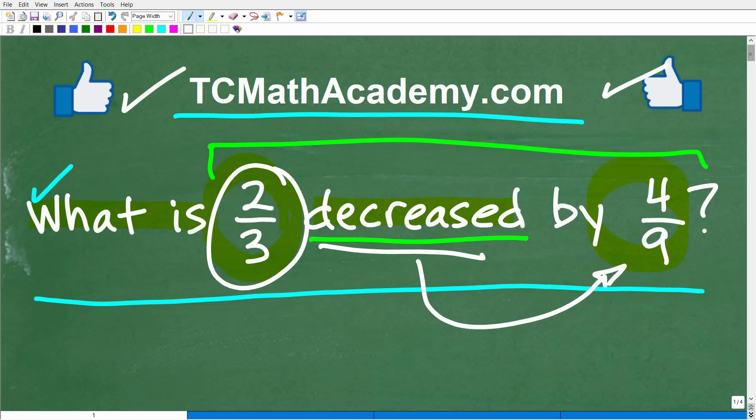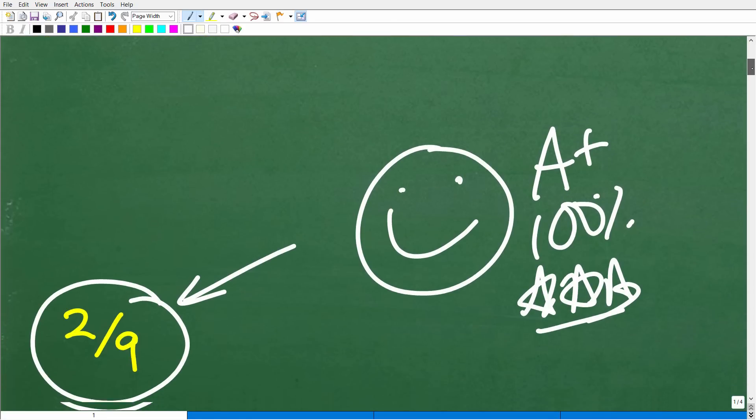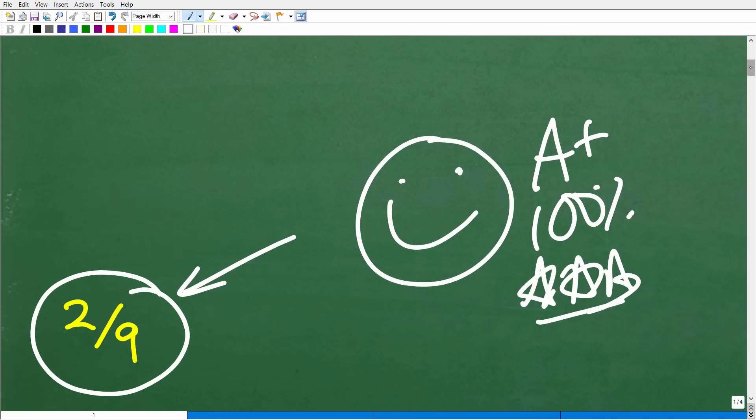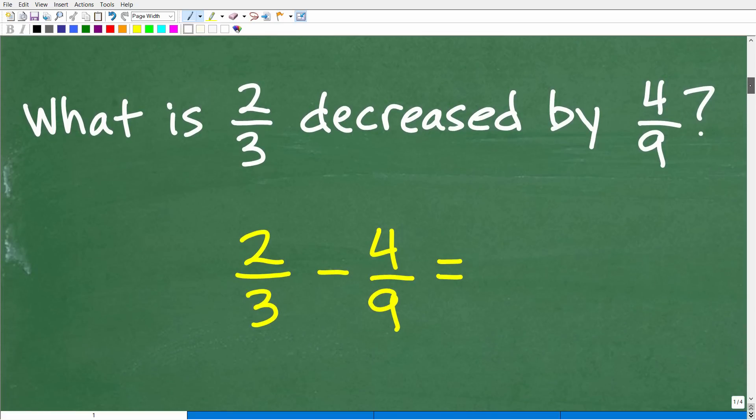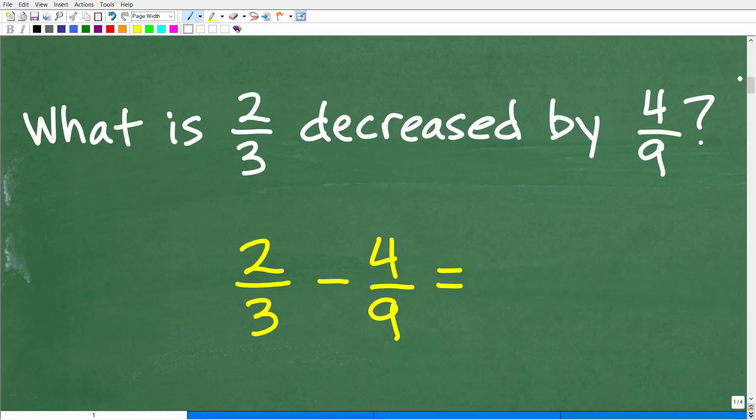So we're going to have to know how to subtract fractions here. So if you're comfortable with fractions, this should be pretty easy. If you forgot fractions, we'll see exactly how to do this problem right now. Okay, so what is two-thirds decreased by four-ninths? Well, again, we need to interpret what this word decreased means. It implies finding the difference between two numbers.